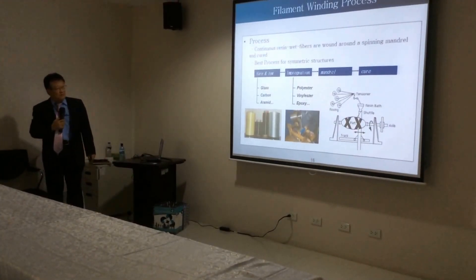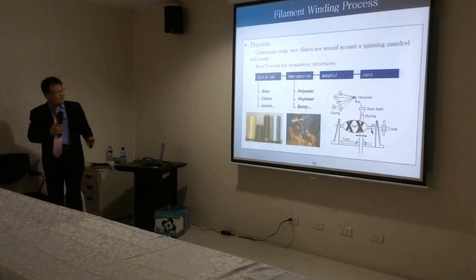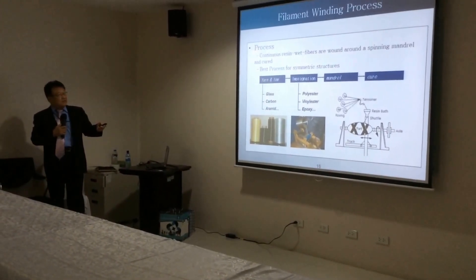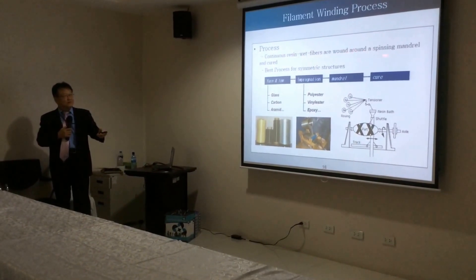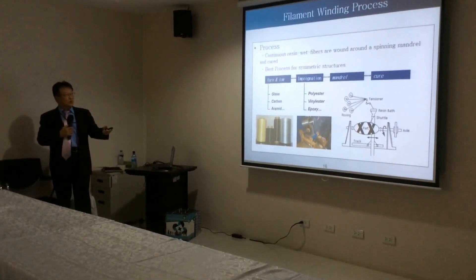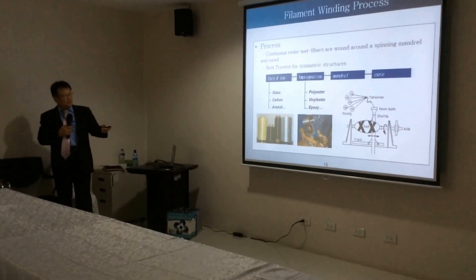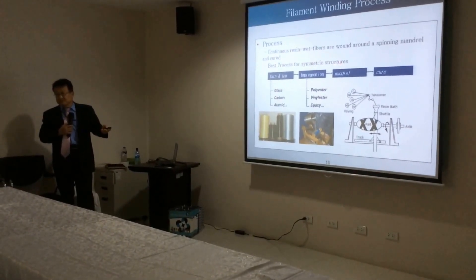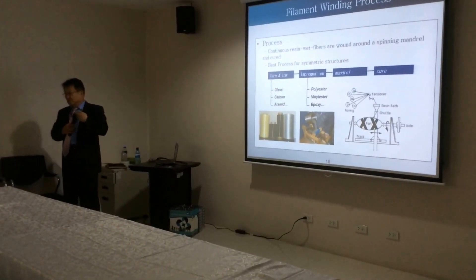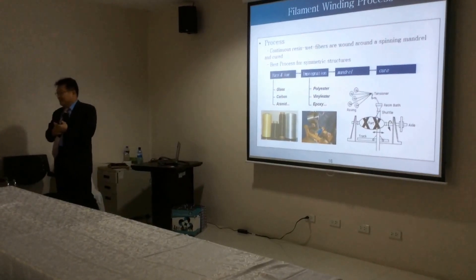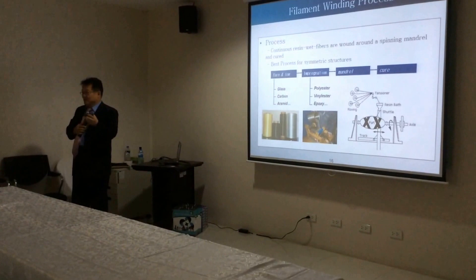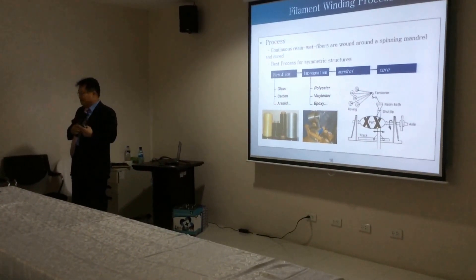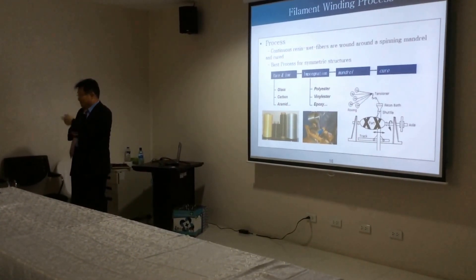For the filament winding process, continuous resin-wet fibers are wound around a mandrel and cured — it is the best process for symmetric structures like cylinders. The problem is it requires continuous fibers, and natural fibers are not continuous, so we need to knot them together to form continuous fiber strands.